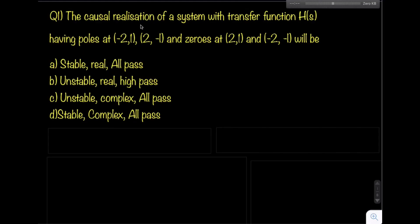Let us try solving this question from signals and systems, GATE 2020 electrical paper. The causal realization of a system with transfer function H(s) has poles at (-2,1) and (2,-1), and zeros at (2,1) and (-2,-1). The options are: stable real all-pass, unstable real high-pass, unstable complex all-pass, or stable complex all-pass.